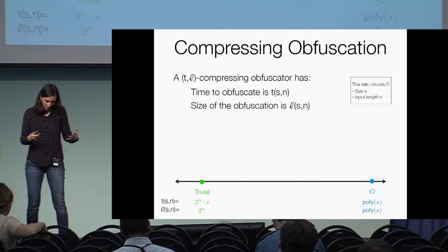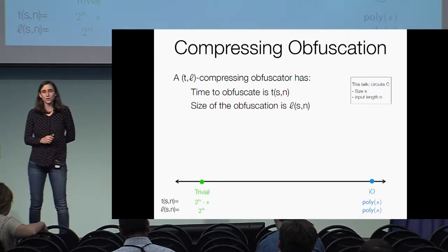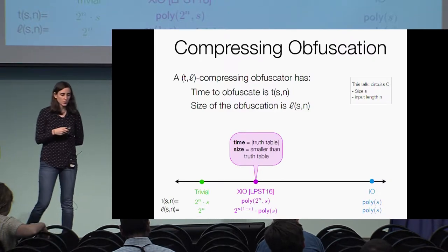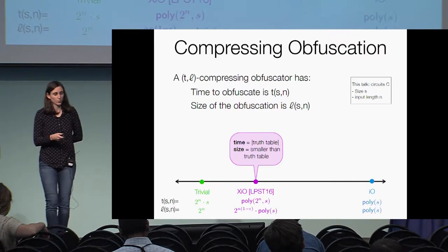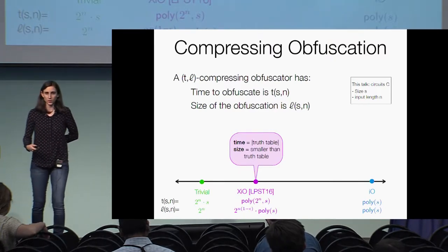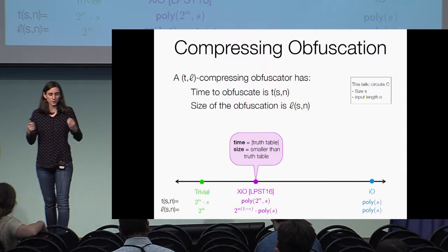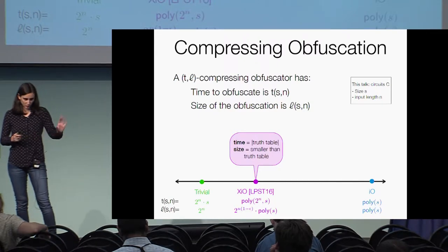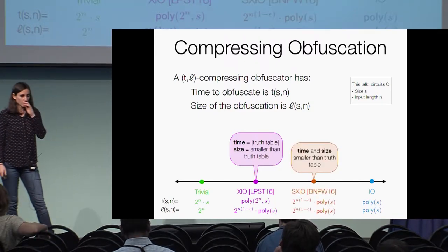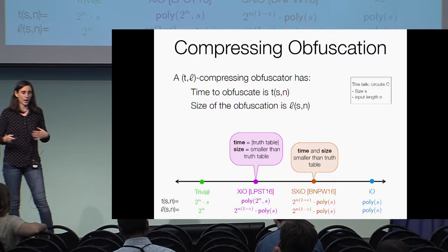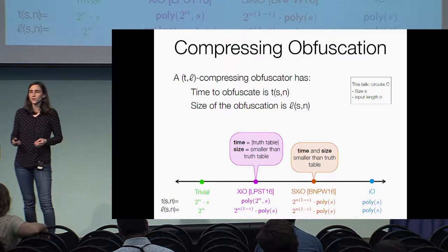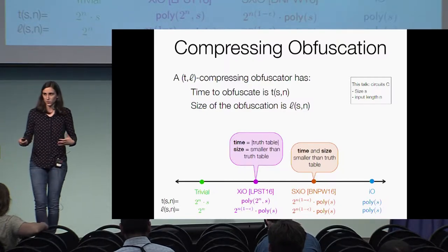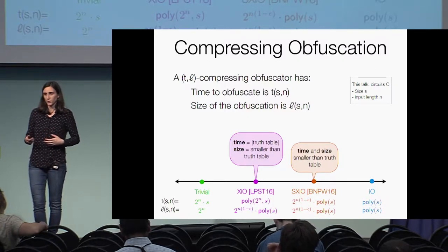This trivial obfuscator is not powerful enough for any cryptographic applications, but by strengthening it a little bit we can get something powerful enough. In particular, one such obfuscator is exponentially efficient IO, or XIO. In XIO, the running time is just as in the trivial obfuscator — polynomial in the truth table of the circuit — so it's very inefficient, but the output length is just slightly smaller than the truth table: 2^N times (1 minus epsilon) times polynomial in the circuit size. This can also be strengthened to strong XIO, or SXIO, in which both the running time and the output length are slightly smaller than the truth table. In both XIO and SXIO, the output length is exponential, so we can only use these obfuscators on circuits with short inputs, such as logarithmic size inputs.